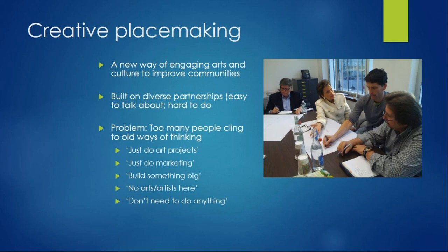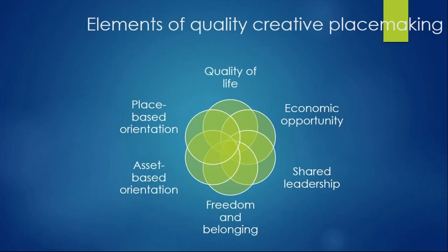The thing about creative placemaking is that it involves anything with art. So what is good creative placemaking? We look at six elements to judge the value of our work, starting at the 12 o'clock position going clockwise. Quality of life: are we enhancing quality of life for as many people as possible? Not just art patrons—not just the person spending a hundred dollars a ticket on a show—but that low-income family who doesn't consider themselves artsy. Are their lives better off because of our intervention?